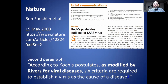Right between the title and the body of this article they're already misleading you. In the second paragraph they wrote 'according to Koch's postulates, as modified by Rivers for viral disease.' So it's not Koch's postulates — it's Rivers' criteria, which is different. They should have put that in the title, but they're misleading you to make you think Koch's postulates have been fulfilled.